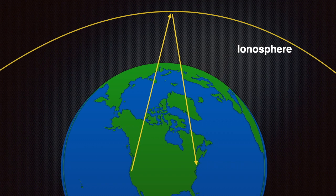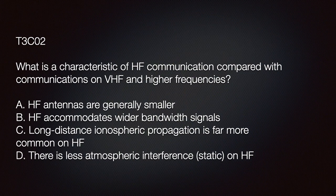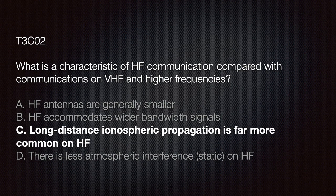The exam question is: what is the characteristic of HF communication compared with communications on VHF and higher frequencies? A) HF antennas are generally smaller; B) HF accommodates wider bandwidth signals; C) long-distance ionospheric propagation is far more common on HF; or D) there is less atmospheric interference or static on HF. The correct answer is C — long-distance ionospheric propagation is far more common on HF.